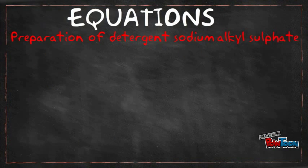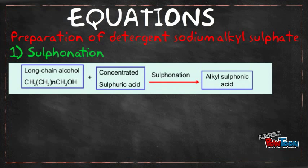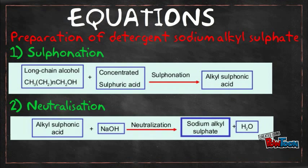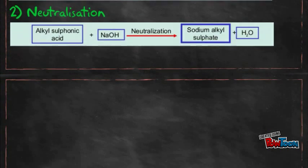Preparation of detergent sodium alkyl sulfate: First, water and alkyl sulfonic acid are formed in the sulfonation process. In the neutralization process, alkyl sulfonic acid is neutralized by adding sodium hydroxide, then sodium alkyl sulfate is formed.